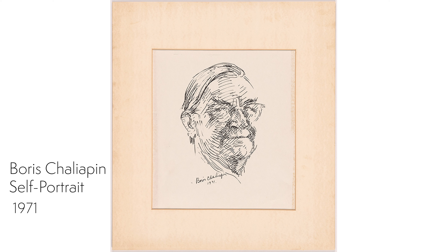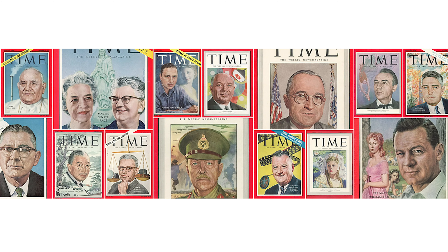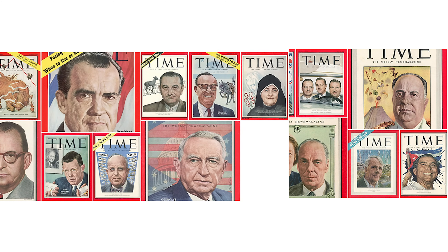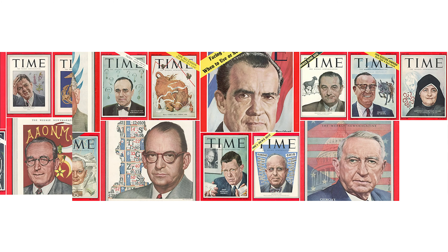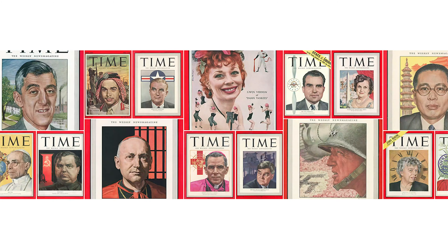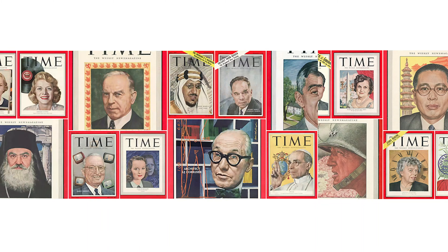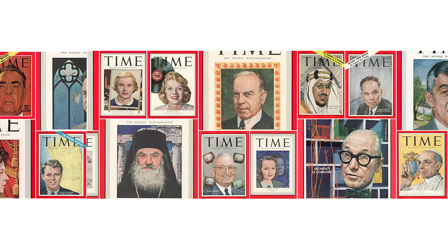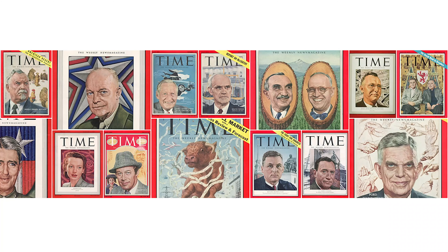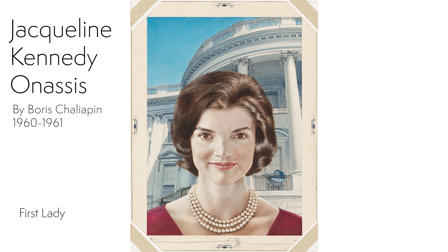One artist who mastered the use of symbols was Boris Chelyapin, also known as Mr. Time. In the three decades that he worked for Time magazine, he created 413 cover portraits. He was the artist the editors turned to when they needed a portrait quickly — he could create a portrait in as little as 12 hours. His paintings are filled with meaning and symbolism. For example, in this portrait of Jacqueline Kennedy Onassis, we can see the White House in the background.